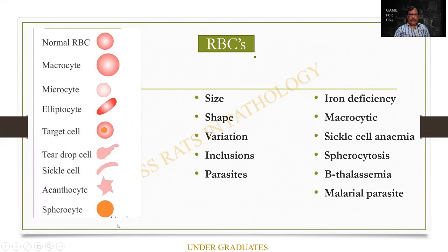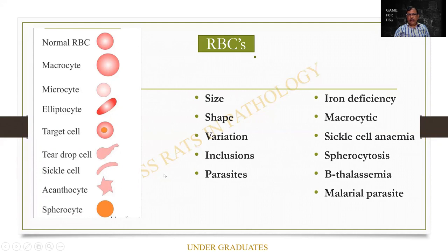These are all the variations you people should have in mind. A normal RBC has central pallor. When larger it is a macrocyte. Small and pale — microcyte. Ovoid — elliptocyte. Target cell has central hemoglobinization. Teardrop cells, sickle cells. Acanthocytes are blunt, irregular cells. Spherocyte with no central pallor — small, dark cells. Some of these variations I have explained well in my one-page book as well as in the record notes.